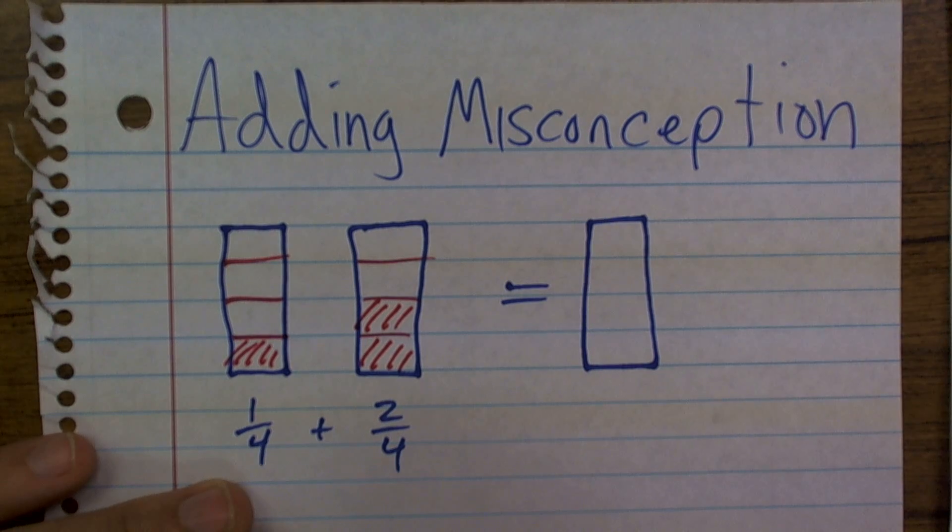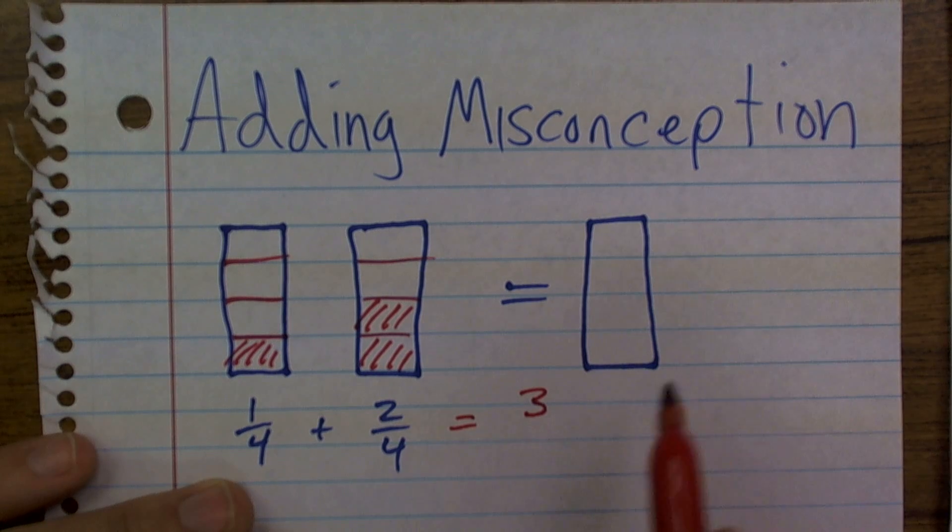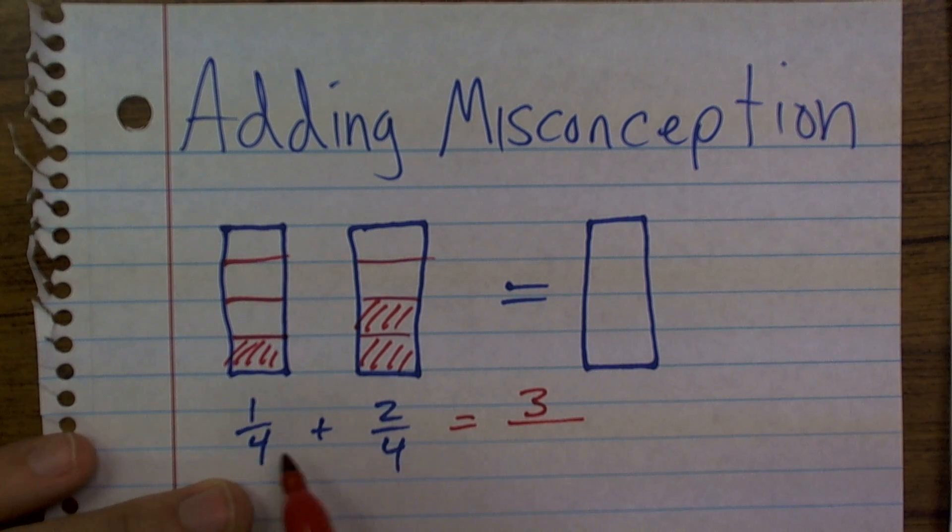one of the bigger mistakes that I notice students do is they add the numerators, which is going to give me three, but then what they also make the mistake is now they add the denominators, which gives me three over eight.